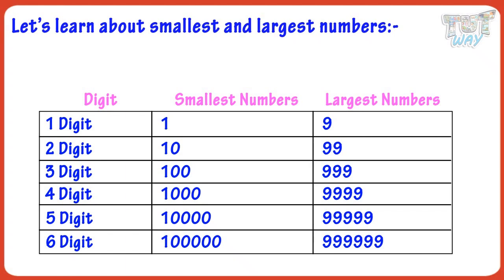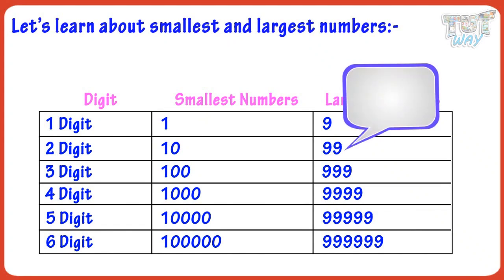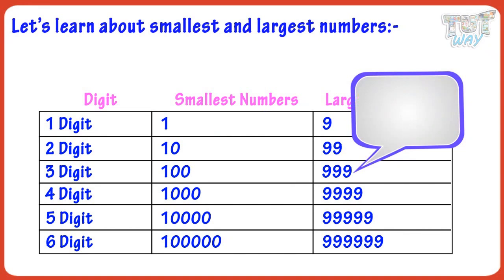Let's see an interesting thing. If you add 1 to the biggest one-digit number, you get the smallest two-digit number — adding 1 to 9 gives you 10. If you add 1 to the biggest two-digit number, you get the smallest three-digit number — adding 1 to 99 gives you 100. And if you add 1 to the biggest three-digit number, you get the smallest four-digit number — adding 1 to 999 gives you 1,000.